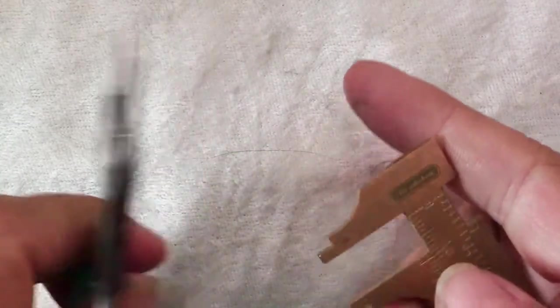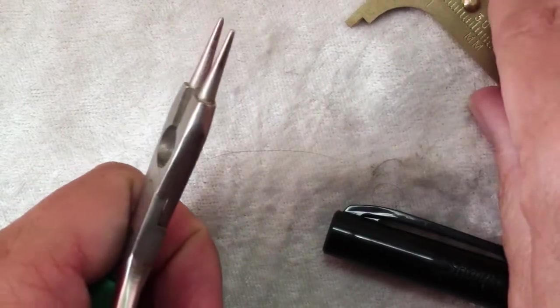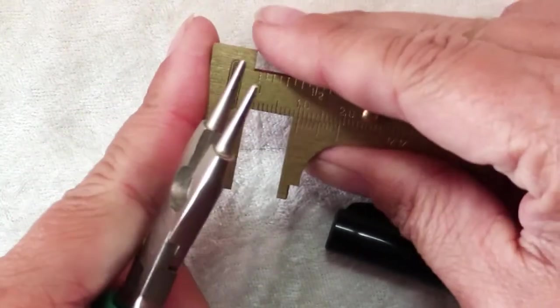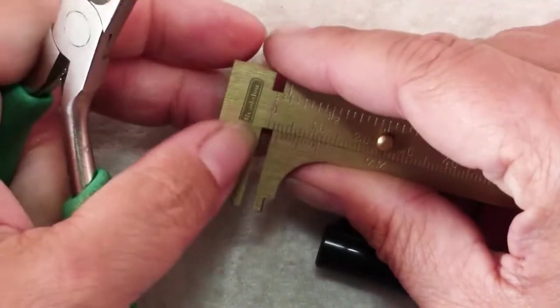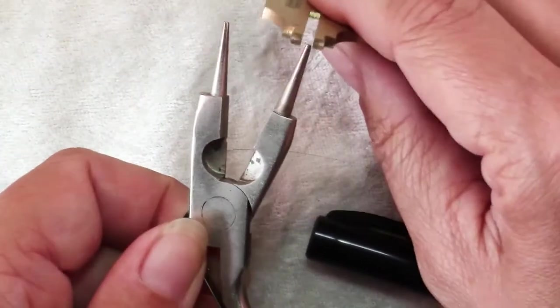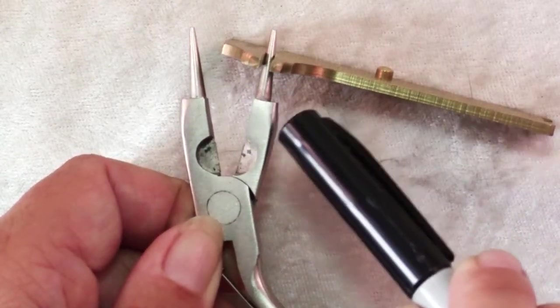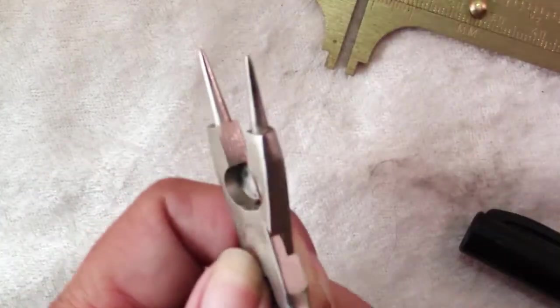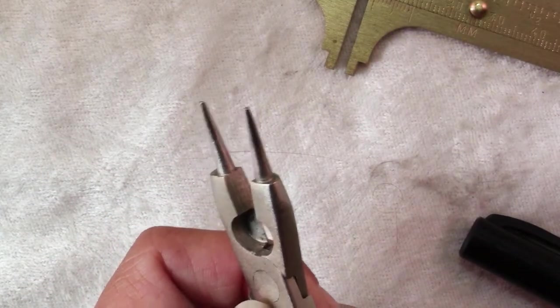With round nose pliers, I often mention using a Sharpie to mark where you want consistent loops. If I set this at 2 millimeters and want consistent 2 millimeter loops, I can put this on here and use my Sharpie to make a mark. Then I'll have consistent loops.